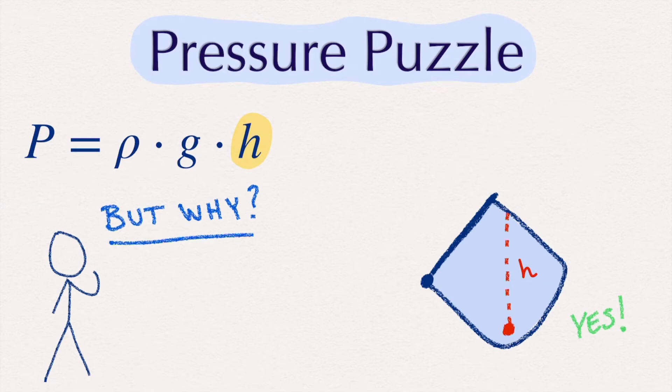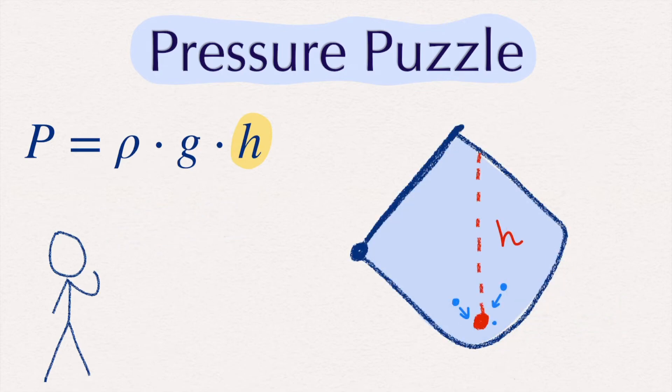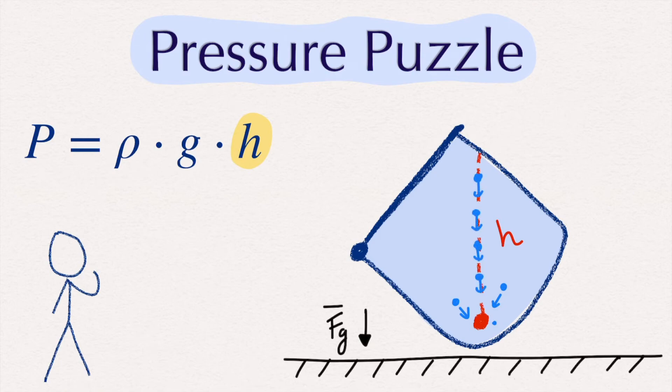But why exactly? Well, to understand why, we remind ourselves what pressure is in the first place. Pressure is the result of the collective collisions of neighboring particles. The magnitude of these collisions is determined by the weight of all of the particles above the measuring point, being pulled down by gravity, pressing down.